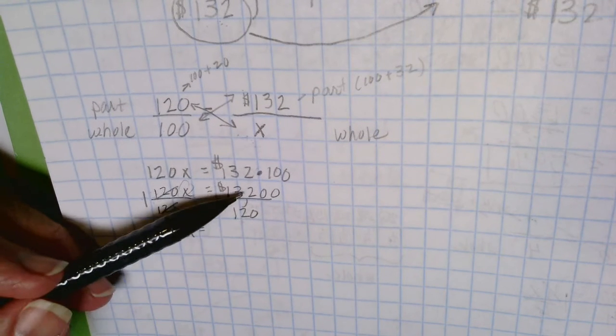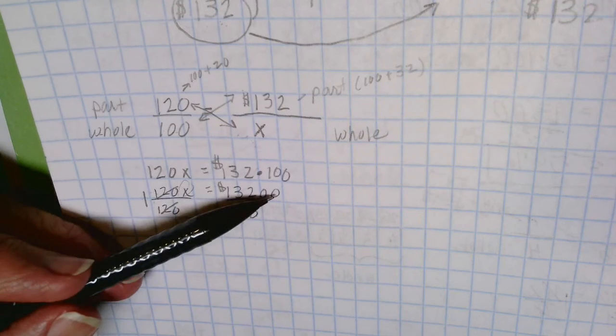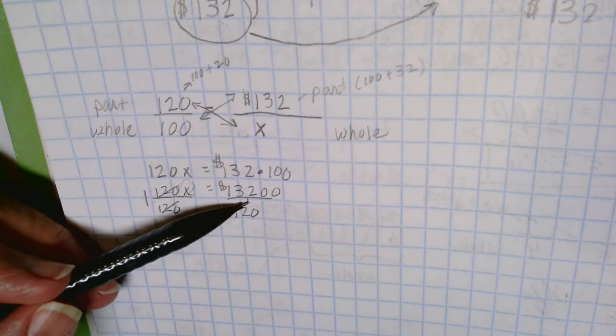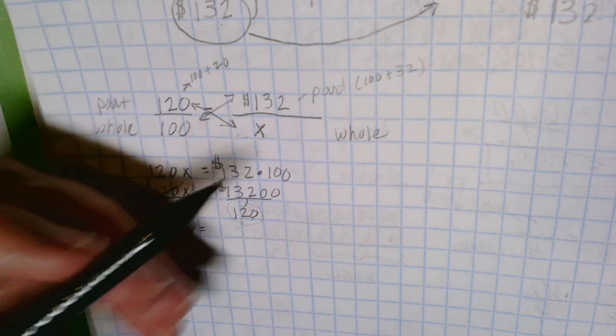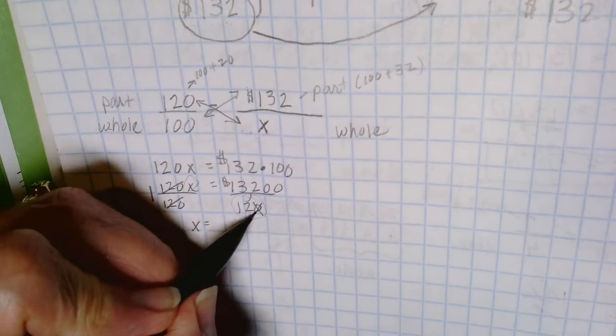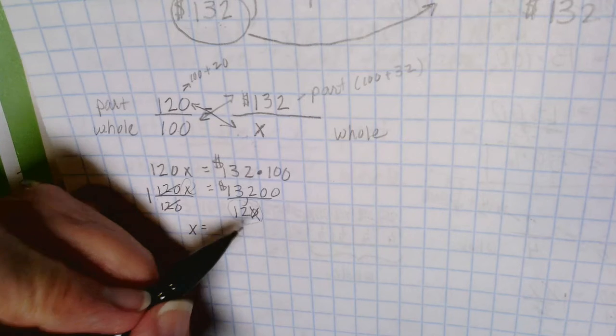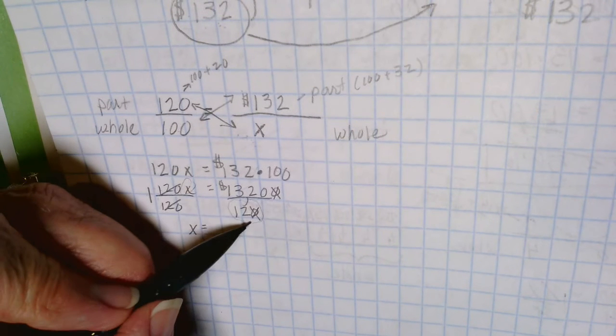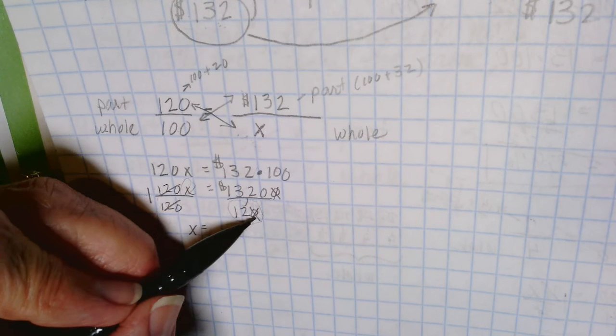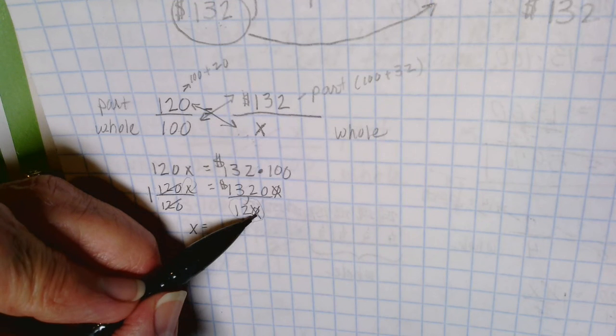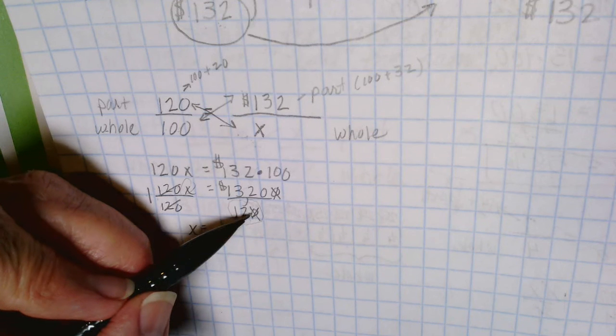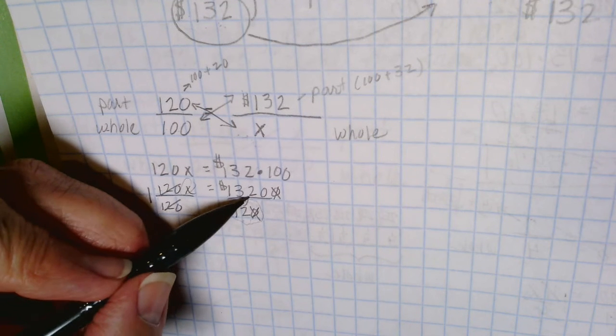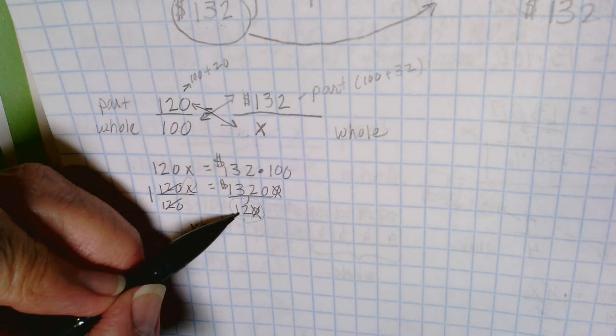On the left-hand side I have two numbers, both of them end in zeros. So I'm going to look at the one that is the smaller quantity and I'm going to cross out the zero down below, and I can cross out the same number of zeros above. In effect I'm simply dividing both parts by 10. So now I'm left with 1,320 divided by 12.